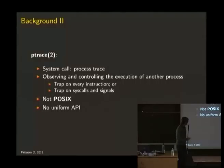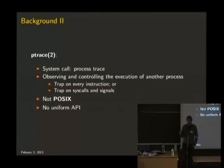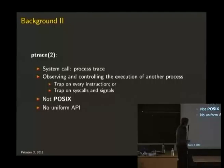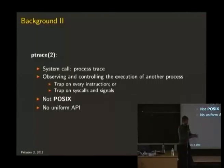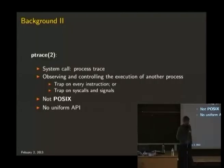How does it work? Basically with ptrace you either start a process and the process says please trace whatever I'm doing, or you can attach to an existing process. Then you can tell ptrace to trap on every instruction — every instruction executed sends you a signal, the process is stopped, you do whatever you want and resume it — or you can tell it to only trap on system calls and signals, which is what we're doing because the other case is very slow.